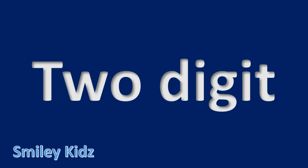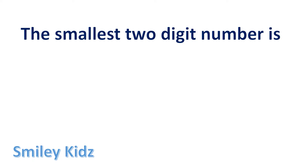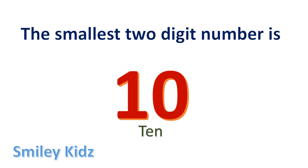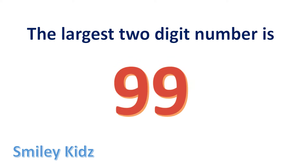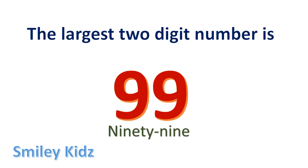Two digit. The smallest two digit number is 10. The largest two digit number is 99.